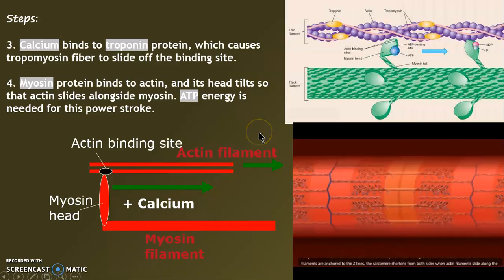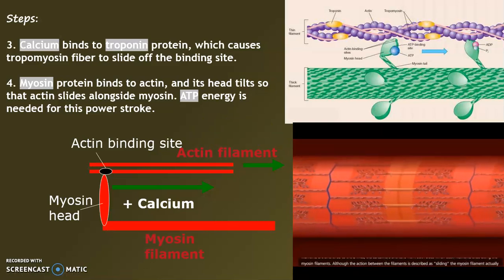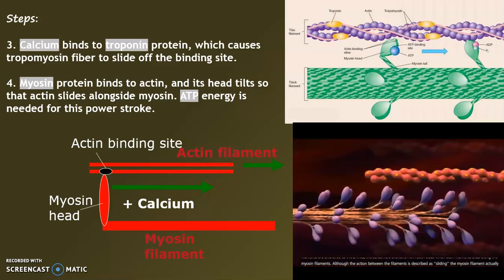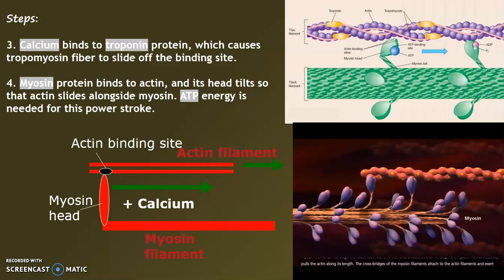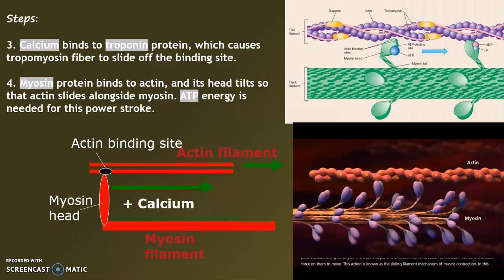Picking up from the last topic: actin and myosin sliding past each other, Z line, M line. At close inspection, we see the myosin heads — they're going to pull the actin past them. So we need ATP and calcium: ATP for energy to form a crossbridge, calcium to open the site.